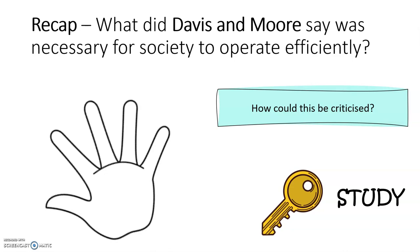For a recap, can you remember without looking back what the key four or five ideas were that Davis and Moore said about society — how certain roles were necessary for society to operate? Can you remember them now? And how could you criticize this idea that all roles need to be performed conscientiously and by well-trained people? That's what we're going to focus on today.